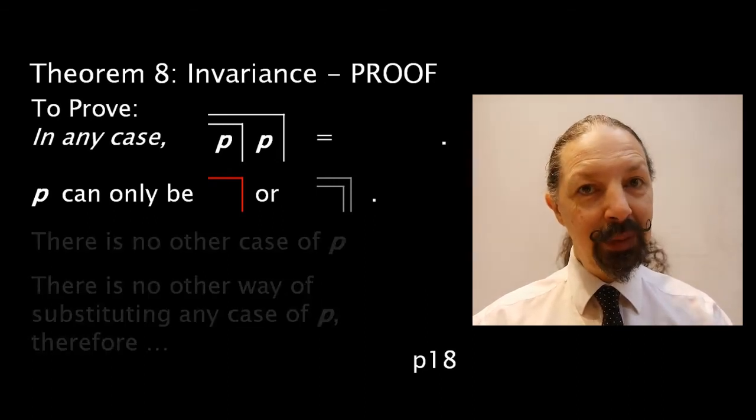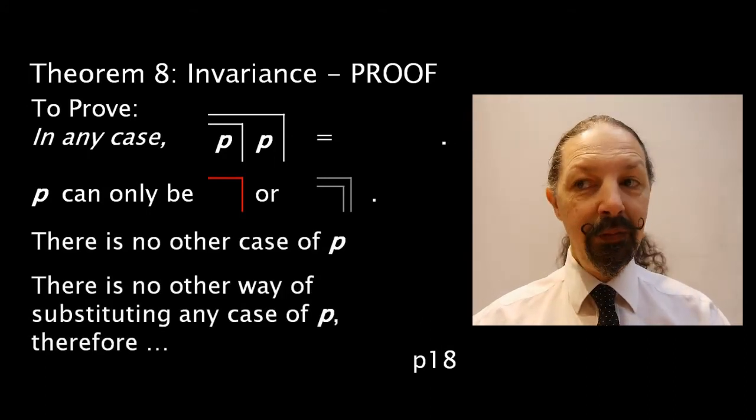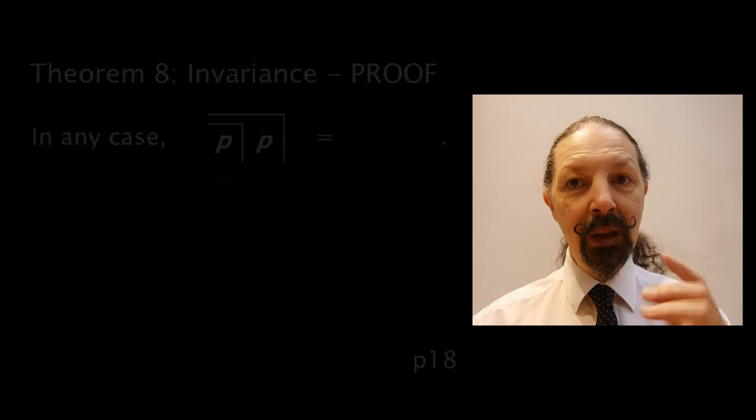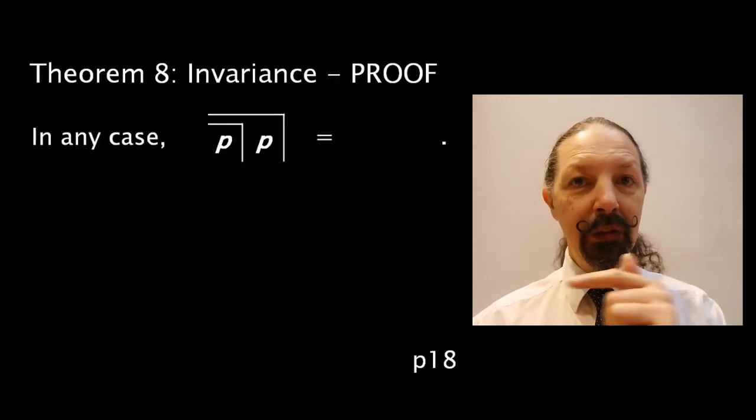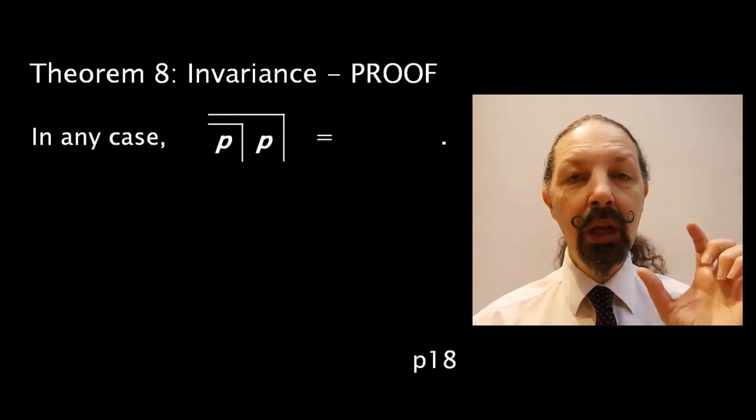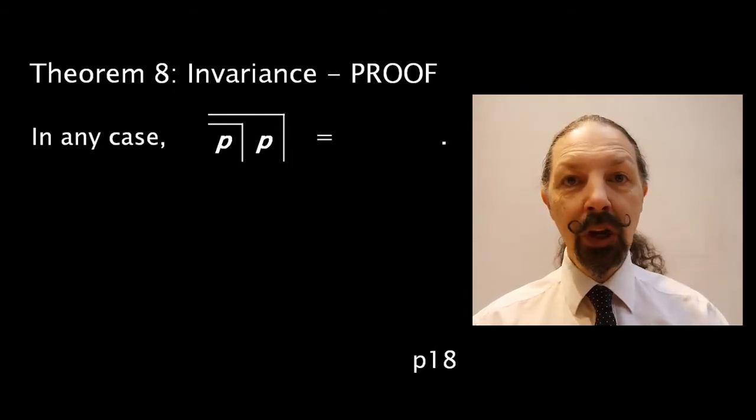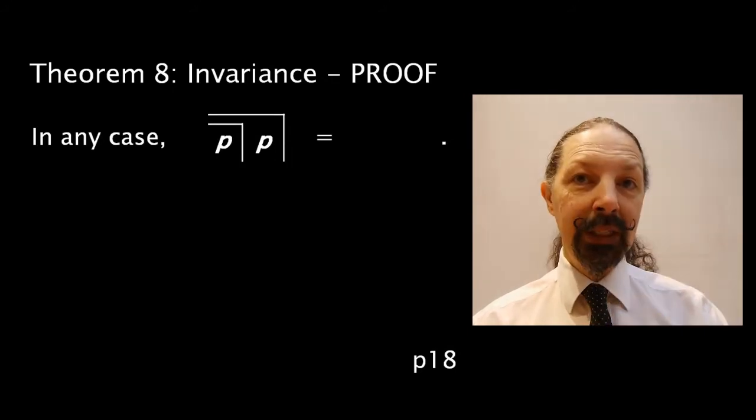Now, since there's no other case of p, and there's no other way of substituting any case for p, therefore, in any case, p mark p mark over two is equivalent to the unmarked state. So, whenever you see that pattern, you can cancel it out, or whenever you see a blank state, you can put it in.